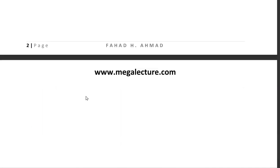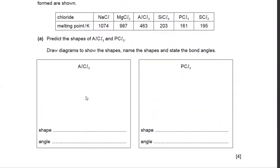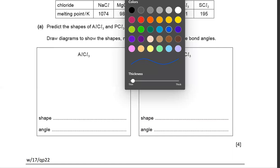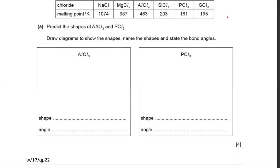Let's begin with the first question: figure out the shape of an AlCl3 molecule. You have to draw a diagram to show the shape. AlCl3 — Al has just three electrons, all three bonded to Cl, so it's just three bonds, three bond pairs. That's going to be fan-shaped, technically known as trigonal planar.